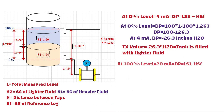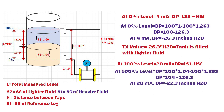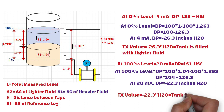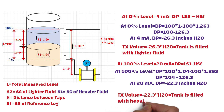This is the standard equation to calculate the upper range value of this transmitter. Putting all these values into the equation and doing the simple math calculation, you will get minus 22.3 inches H2O, which is our upper range value for this transmitter. In other words, when the transmitter reads minus 22.3 inches H2O, the tank is filled with heavier fluid.